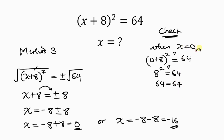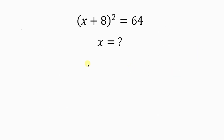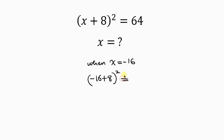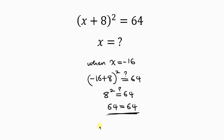Now checking x = −16: substituting gives (−16 + 8)² = (−8)² = 64, which equals the right hand side of 64. Both values are confirmed correct. You can indicate which of these three methods you prefer in the comment section below.